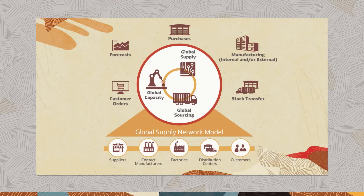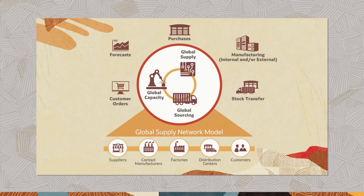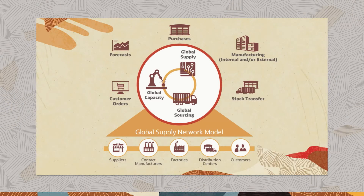To stay competitive, supply chains today need more agile and better responses to ever-changing demand and supply conditions. Making the most advantageous trade-offs among multiple available options to fulfill customer demand needs intelligent decision support software. This quick tour helps us visualize how Oracle Supply Planning provides robust automation and advanced analytics to optimize end-to-end supply with minimum human intervention.